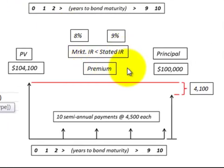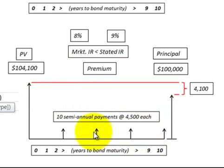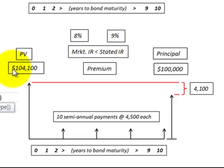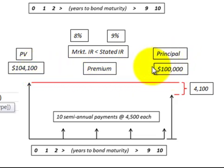Now if we look at a bond purchased at a premium, we do the same thing — we discount that principal amount back as well as those semi-annual payments back, using the market rate of interest. We'll see that the present value, after discounting the face value and payments back, is greater than the principal amount. In the case of a premium, that's called a premium.